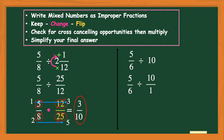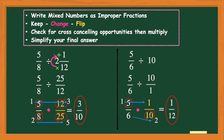Now I have a fraction divided by a fraction, so I can use keep-change-flip: keep 5/6, change division to multiplication, flip 10/1 to its reciprocal 1/10. Looking for cross-canceling opportunities — 5 and 10 share a common factor of 5: 5 ÷ 5 = 1 and 10 ÷ 5 = 2. The 1 and 6 share no common factors, so leave those alone. Multiply numerators: 1 × 1 = 1. Multiply denominators: 6 × 2 = 12. The answer is 1/12, which is already in simplest form.